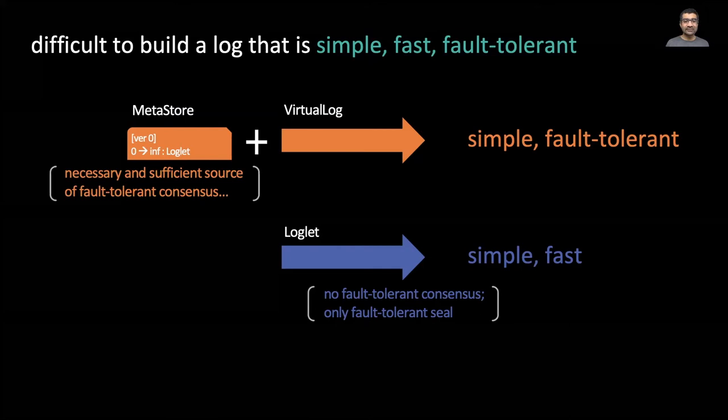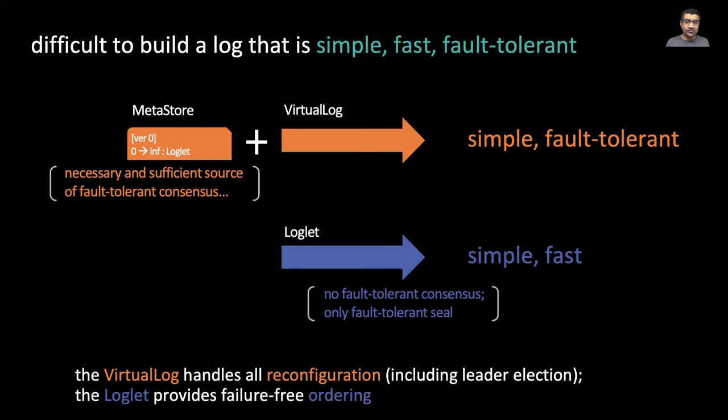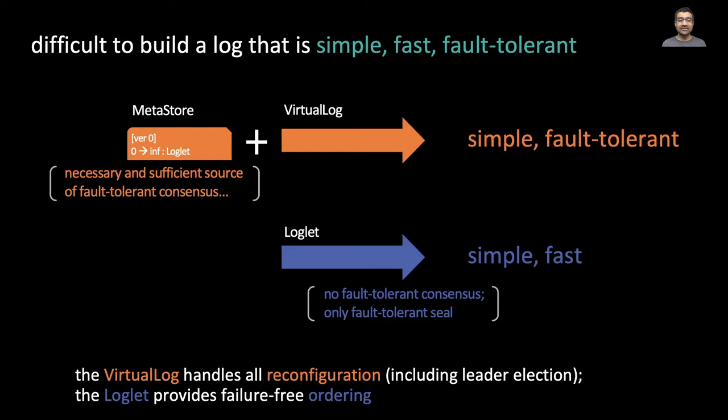The only source of consensus is the meta store, storing the mapping to the loglets. In essence, we implemented reconfiguration once in the virtual log, and we use it for all types of failures. Not just for switching between entirely different loglet types, but also for switching between different instances of the same loglet type. As a result, we avoid the need for any kind of reconfiguration or leader election within the loglet. Now, this sounds great in principle, but how do we realize this split in practice?